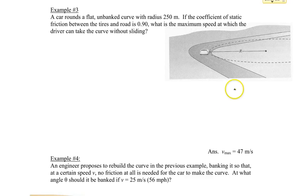Welcome to example number three. We have a car going around a flat unbanked turn with a radius of 250 meters. We are given the coefficient of static friction which is 0.9 and we want to know what is the maximum speed that this car can negotiate this turn without slipping off the road.